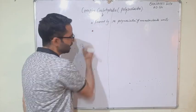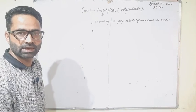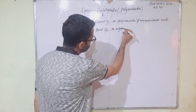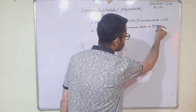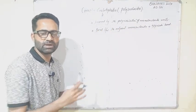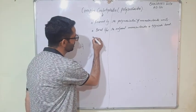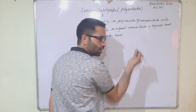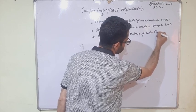The bond between two adjacent monosaccharides is called the glycosidic bond. When this glycosidic bond is formed between monosaccharide units, a water molecule is released. So this glycosidic bond is always formed with the release of a water molecule, that is H2O.